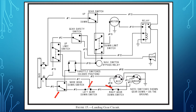The nose gear down, left gear down, and right gear down switches complete the circuit to the down indicator light, turning it on when all three landing gear are down and locked in position. The nose gear down switch also allows current to flow through the throttle switch and the down limit switch to the warning horn.